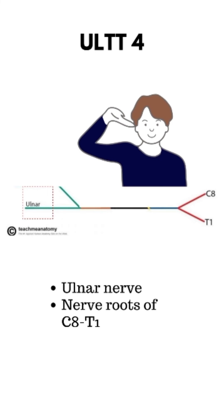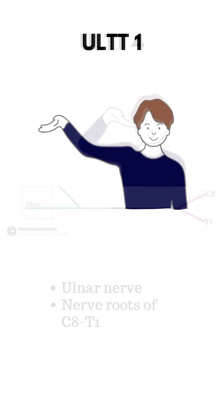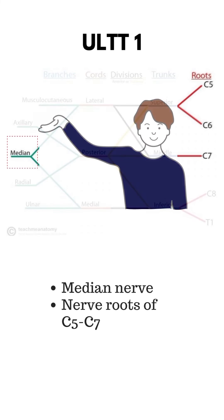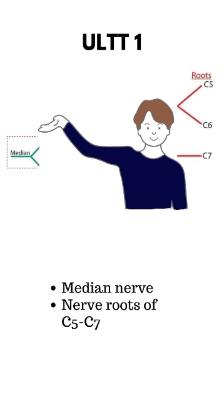So, how do you test the C5 to C7? That's tested in ULTT 1. ULTT 1 is nerve root C5 to 7 and median nerve. So, which ULTT tests median nerve also? That's right, it's ULTT 2, M-A-M, Musculocutaneous, Axillary, and Median.